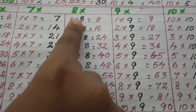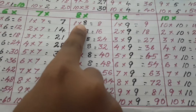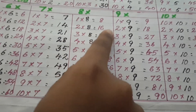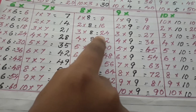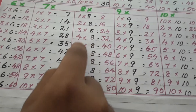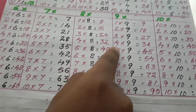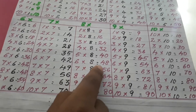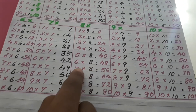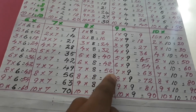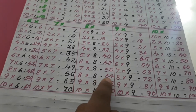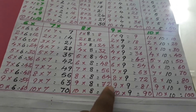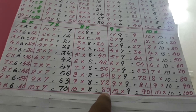Now, let's see table of 8. 1 eight is 8. 2 eights are 16. 3 eights are 24. 4 eights are 32. 5 eights are 48. 6 eights are 48. 7 eights are 56. 8 eights are 64. 9 eights are 72. 10 eights are 80.